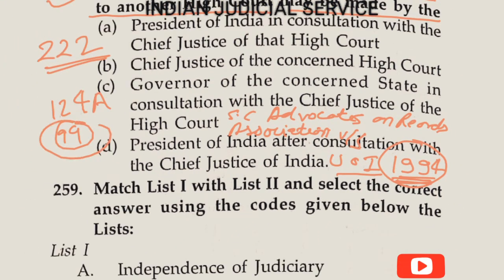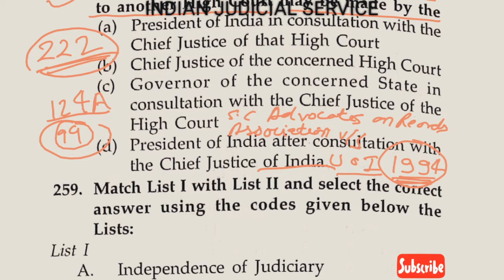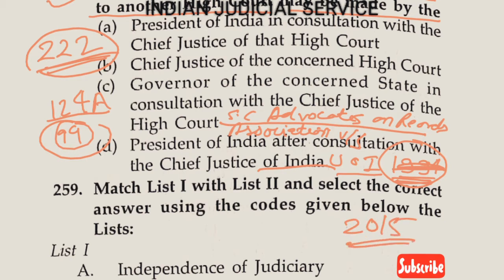After the 99th amendment, Article 222 provided that the President, after consultation with the National Judicial Appointment Commission, may transfer a judge. However, in Supreme Court Advocates on Record Association versus Union of India 2015, the Supreme Court declared the National Judicial Appointment Commission void, stating it attacked the sovereignty of the judiciary and disturbed Article 50, which provides for separation of judiciary from the executive. The 99th amendment was struck down.